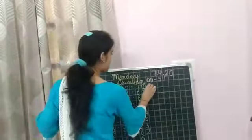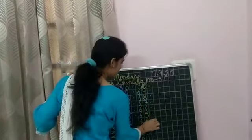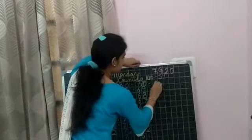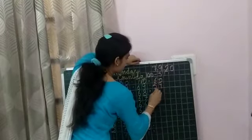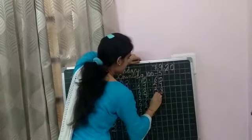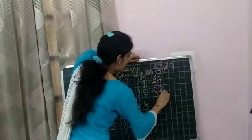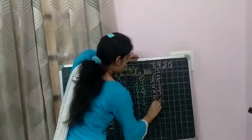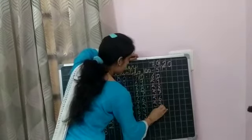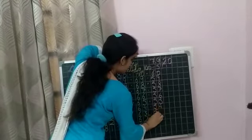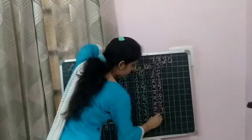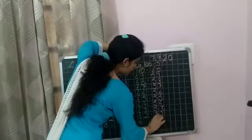Okay. Now, again, leave one line. What comes before sixty-one? Sixty. And, what comes before sixty? Fifty-nine. Then, fifty-eight. Fifty-seven. Fifty-six. Fifty-five. Fifty-four. Fifty-three. Fifty-two. And, fifty-one.